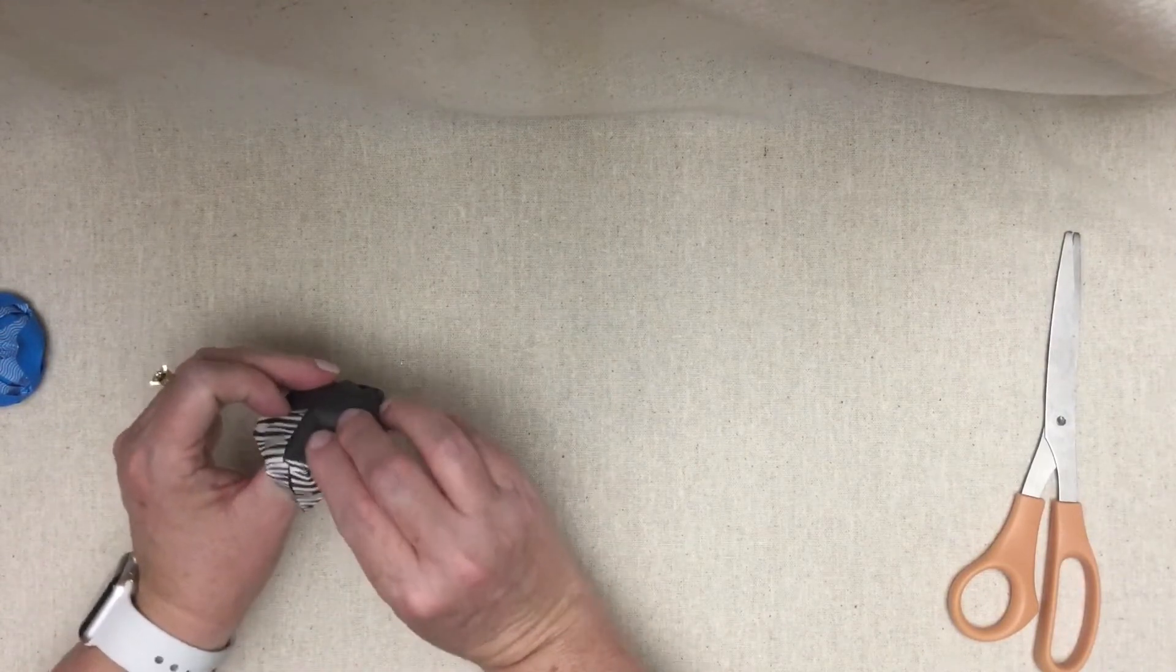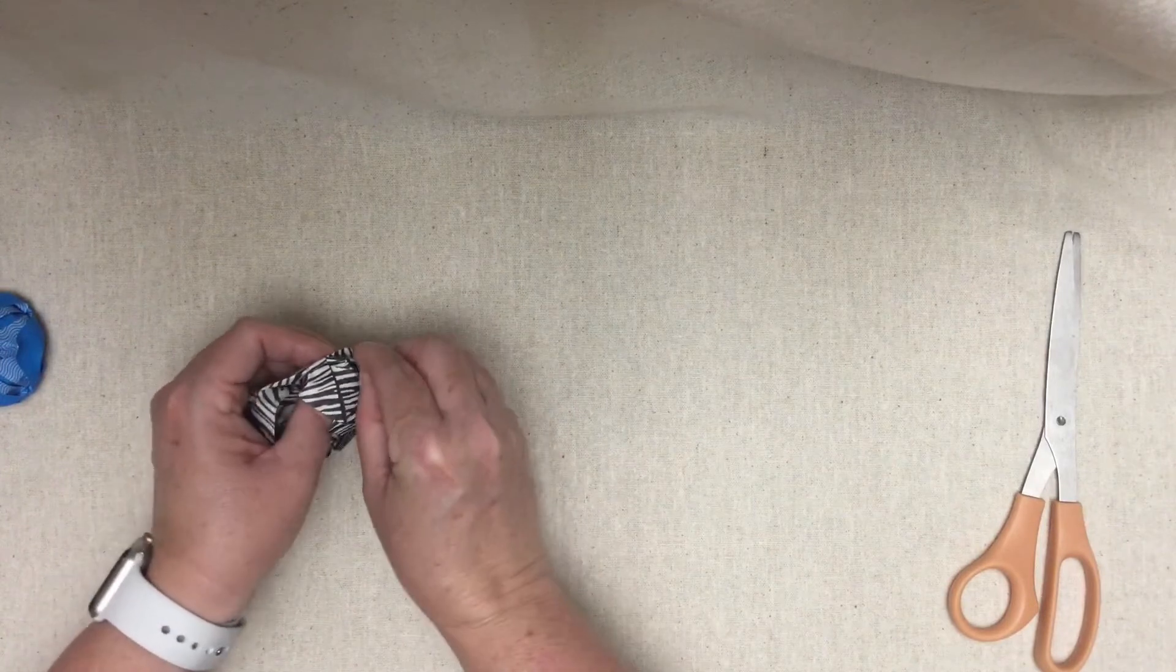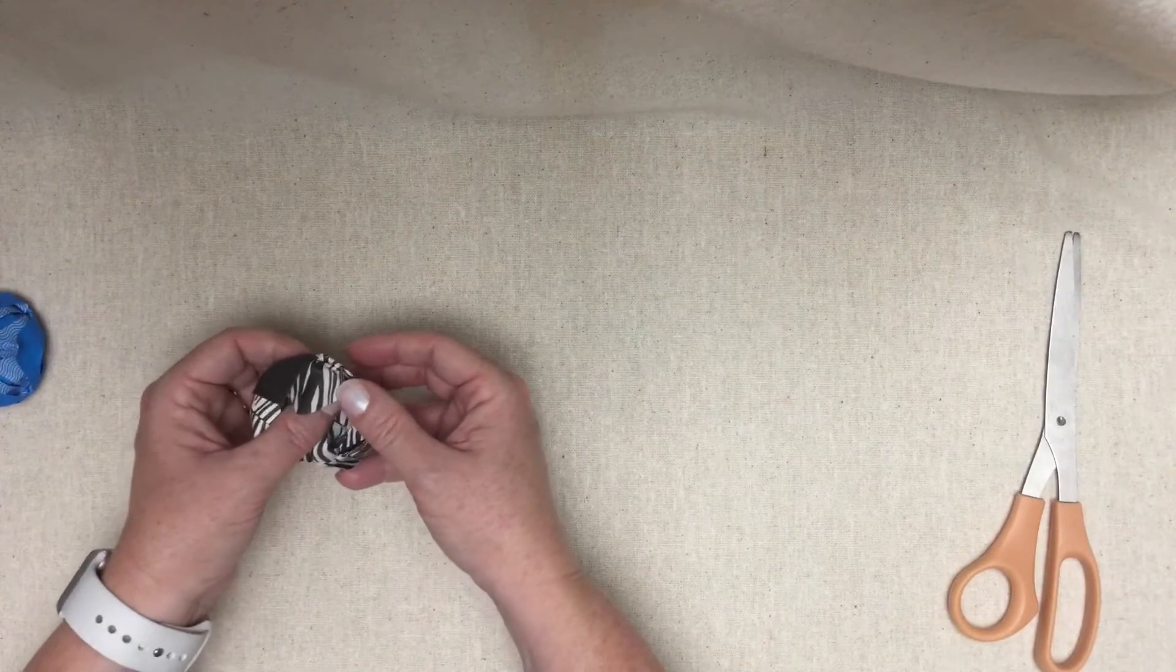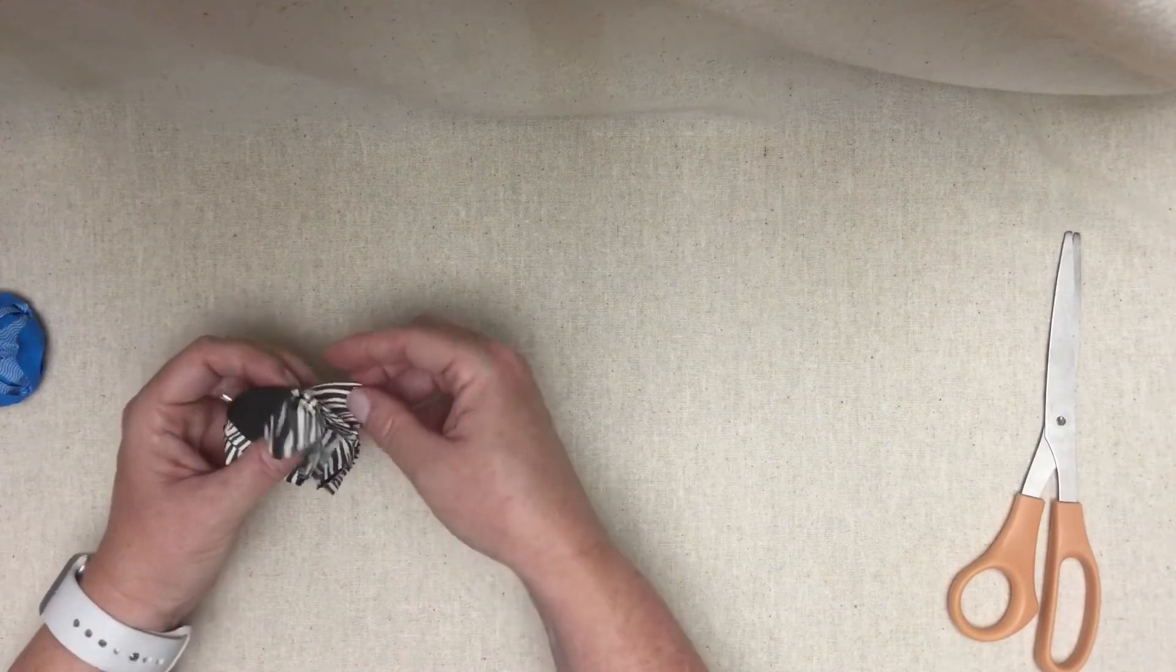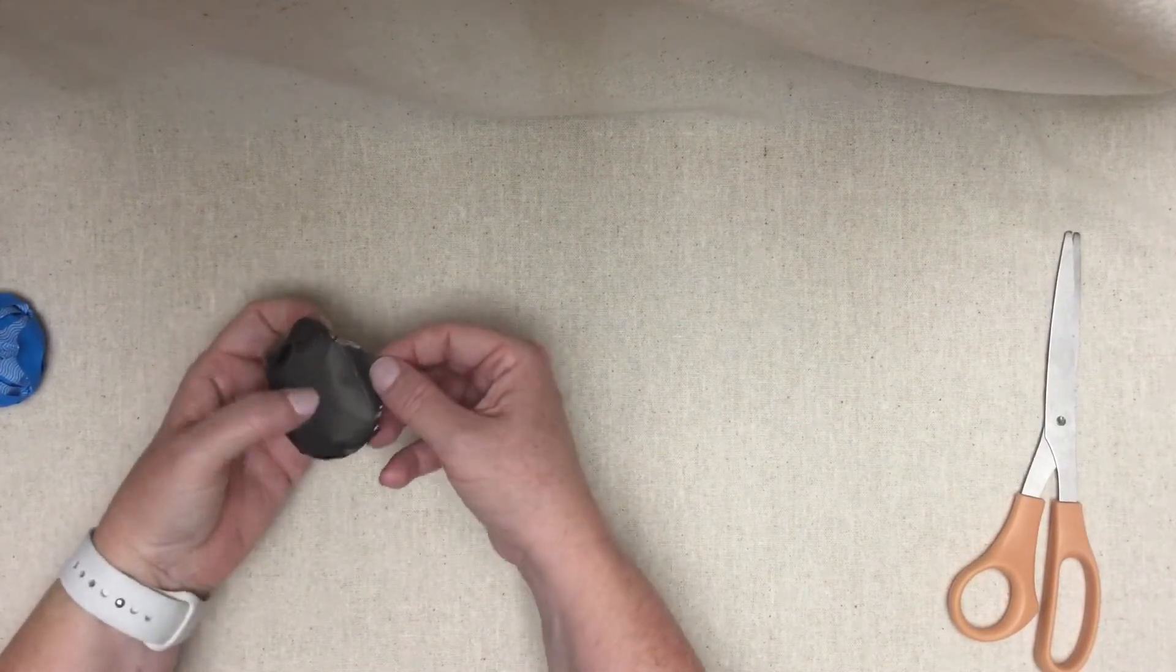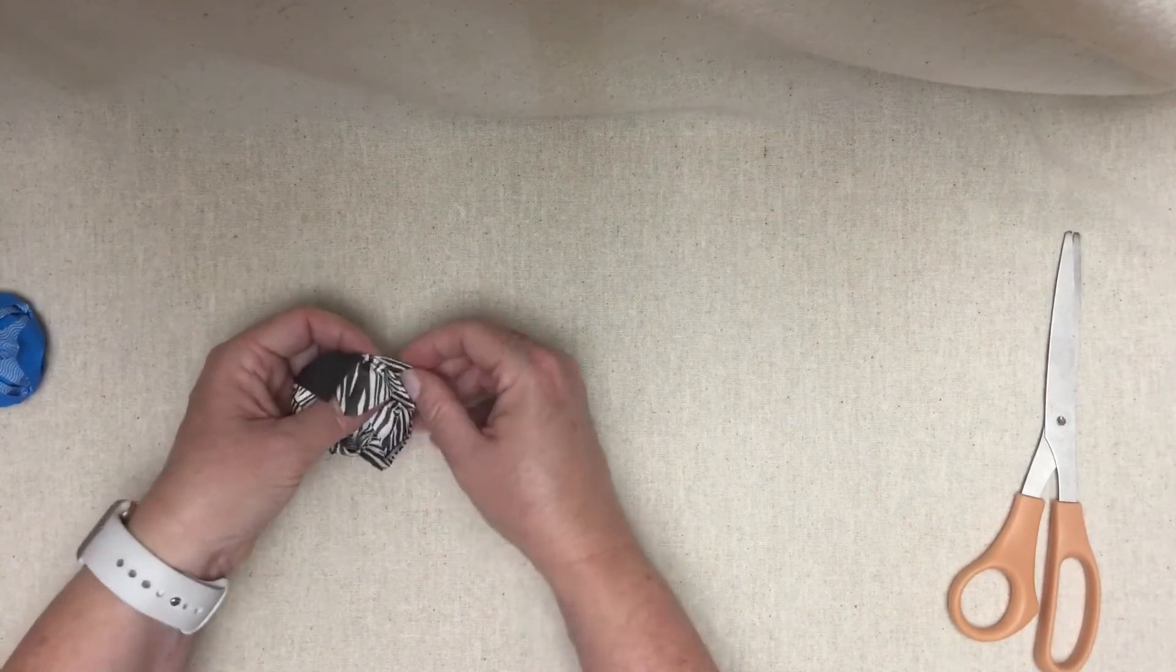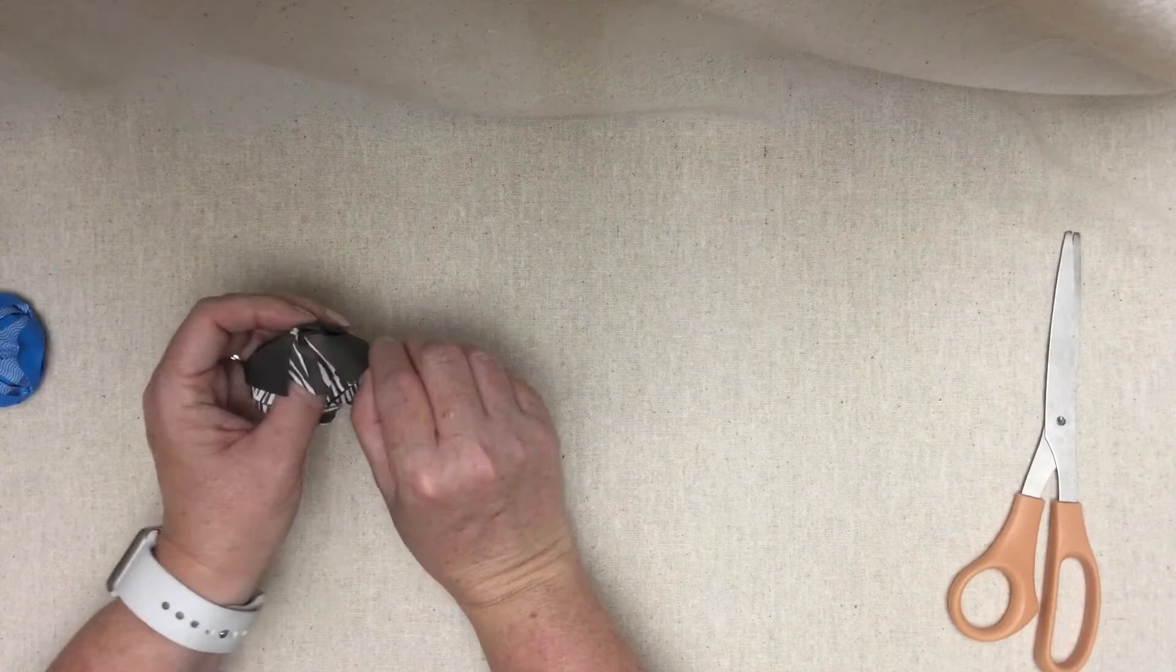Fold the next petal outward. Pinch the base. Pull upward. Last one. Fold it outward, crease it. Pinch the base and pull it upward.